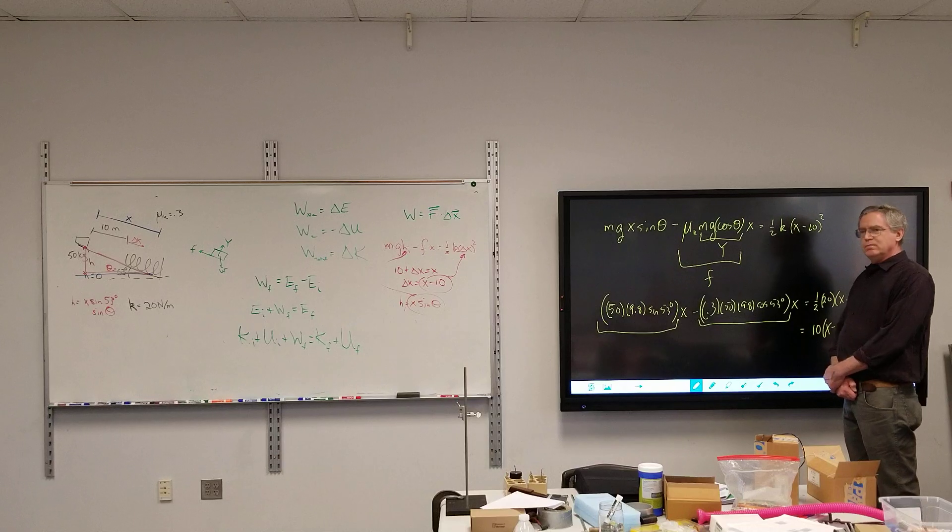502.86 squared is 252,868. Minus the 40,000. 212.868. 461.376. So, we're going to have two answers.